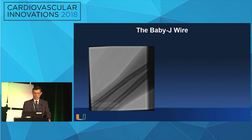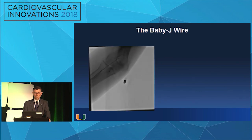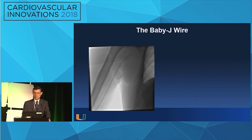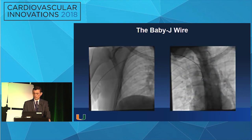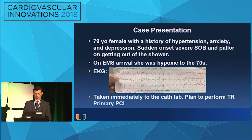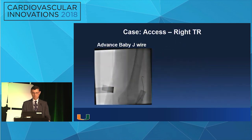This is the baby J wire — soon after going in, it takes the shape and you can see it's not going into any side branch. When you get up in the arch, have the patient take a deep breath, direct the wire with the catheter, and you are in the ascending aorta. Here's a case illustration: a 79-year-old lady presenting with a STEMI. We activate the cath lab and maximize the use of transradials by trying to do all primary PCIs via transradial access, because that's where outcomes are best.